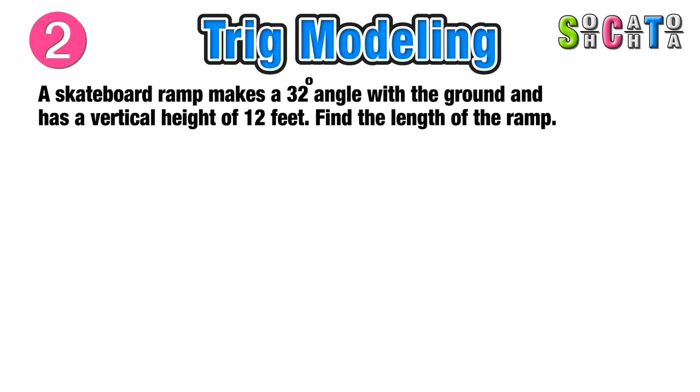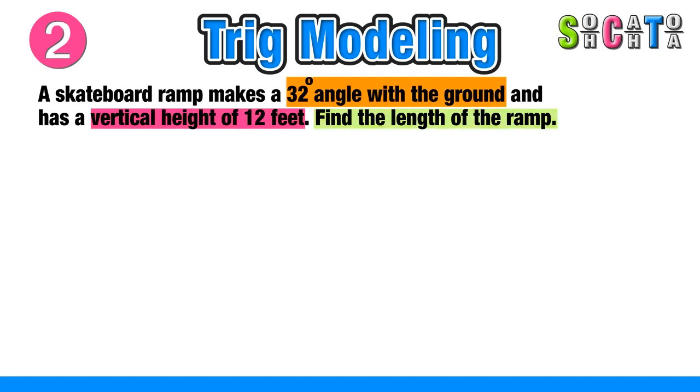Here we have a skateboard ramp making a 32-degree angle with the ground that has a vertical height of 12 feet, and we want to find the length of the ramp.